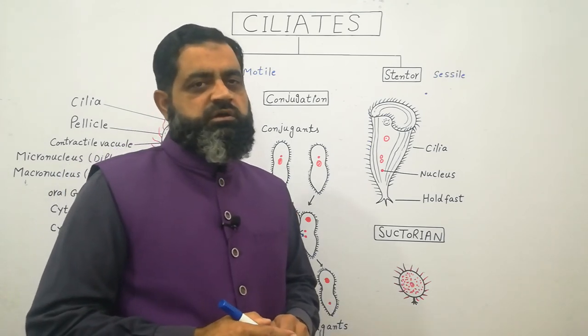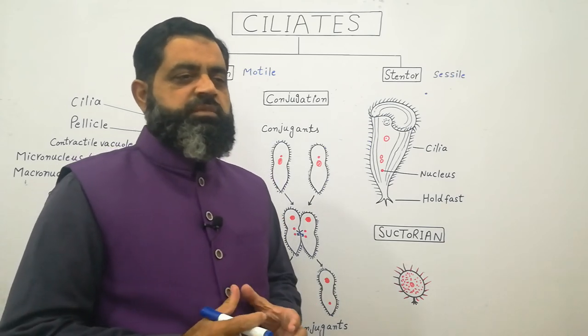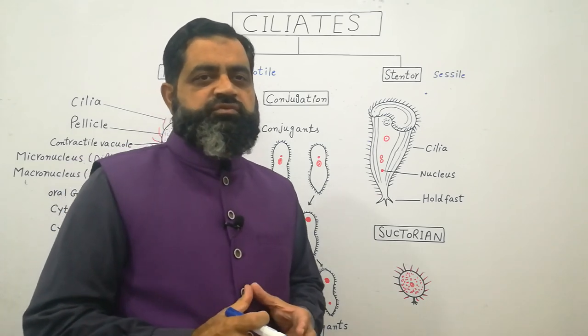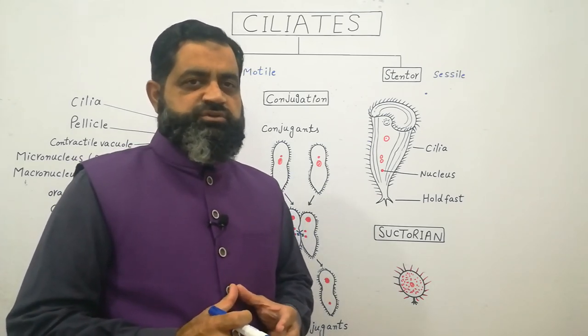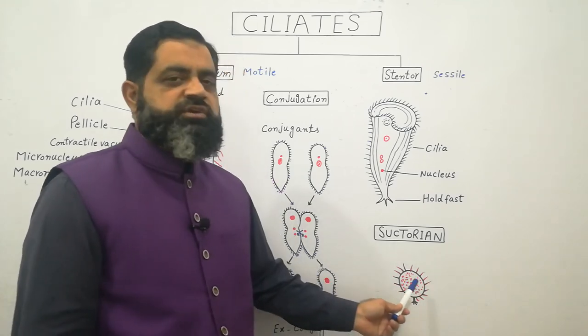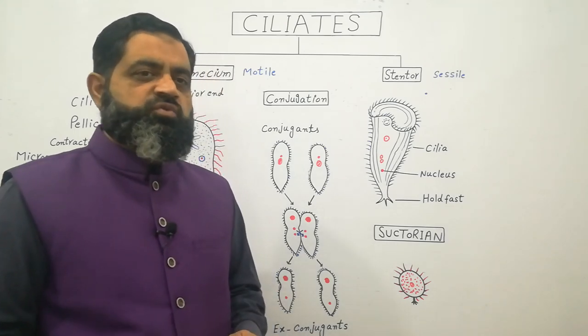They usually prey upon some other ciliates or microorganisms. They release a special type of structure which is known as trichocyst. Trichocyst paralyzes prey which they engulf with the help of phagocytotic activity and digest the unlucky victim.